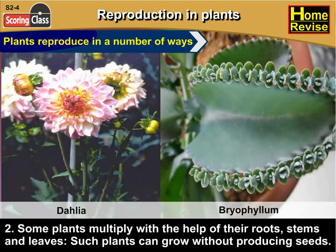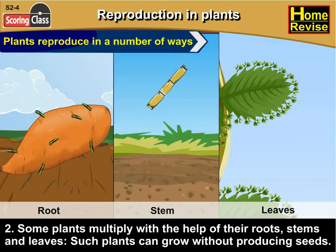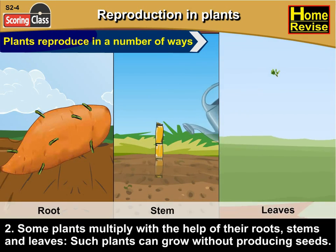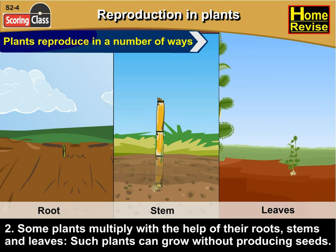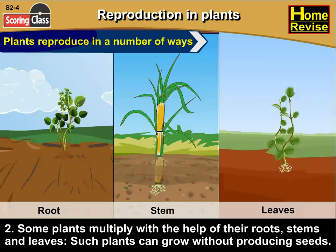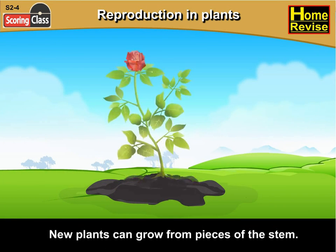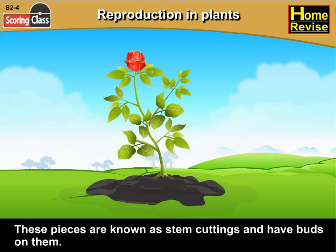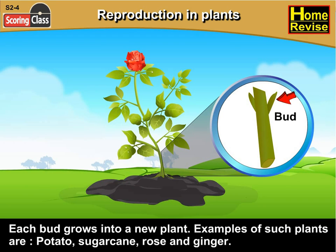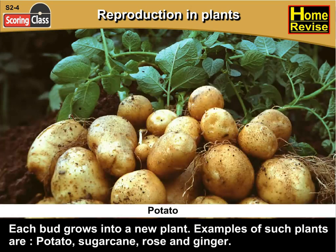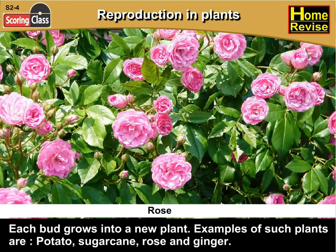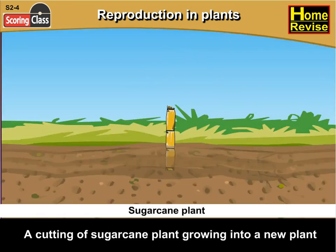Second, some plants multiply with the help of their roots, stems and leaves. Examples include potato, sugarcane, rose and ginger. A cutting of a sugarcane plant can grow into a new plant.